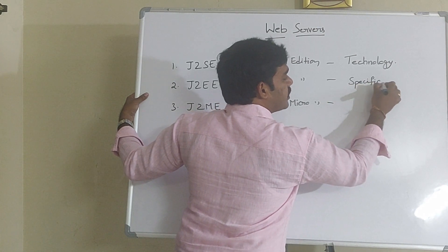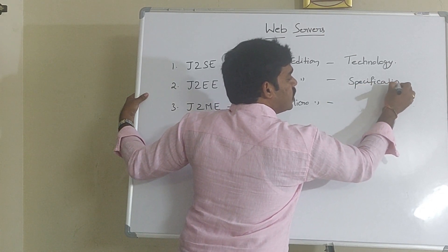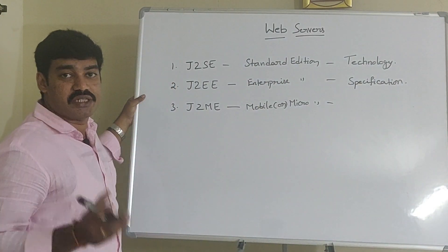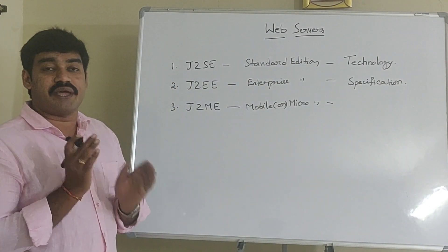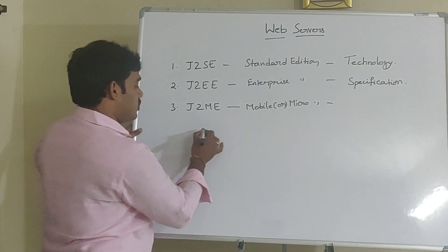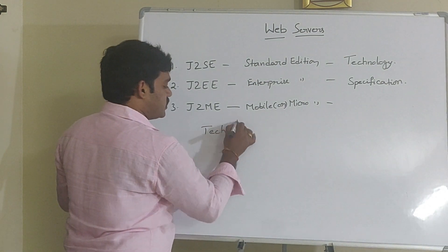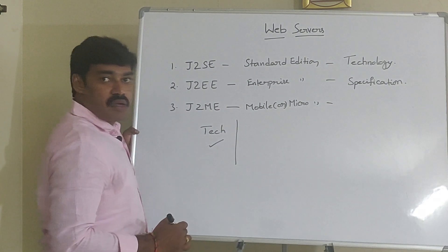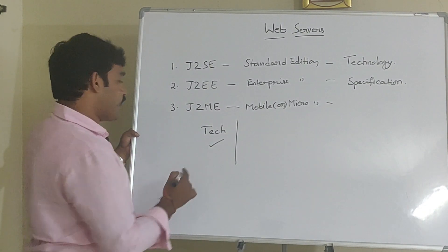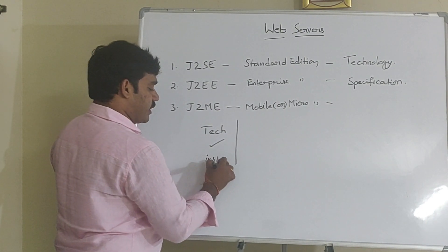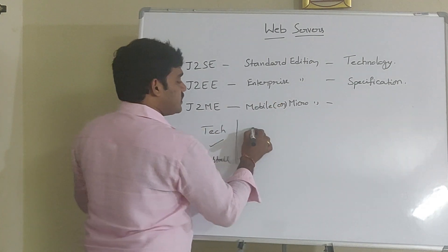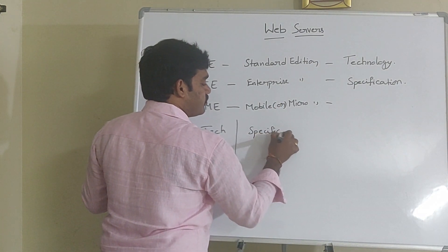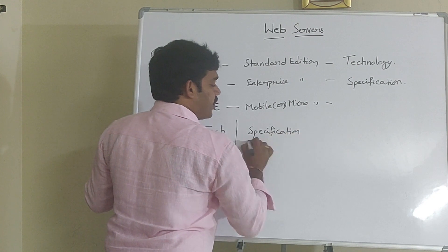What is the difference between technology and specification? This is an important interview question. Technology means an already implemented one. We can download it from the net and we can install it into our system directly. Whereas specification is a document.